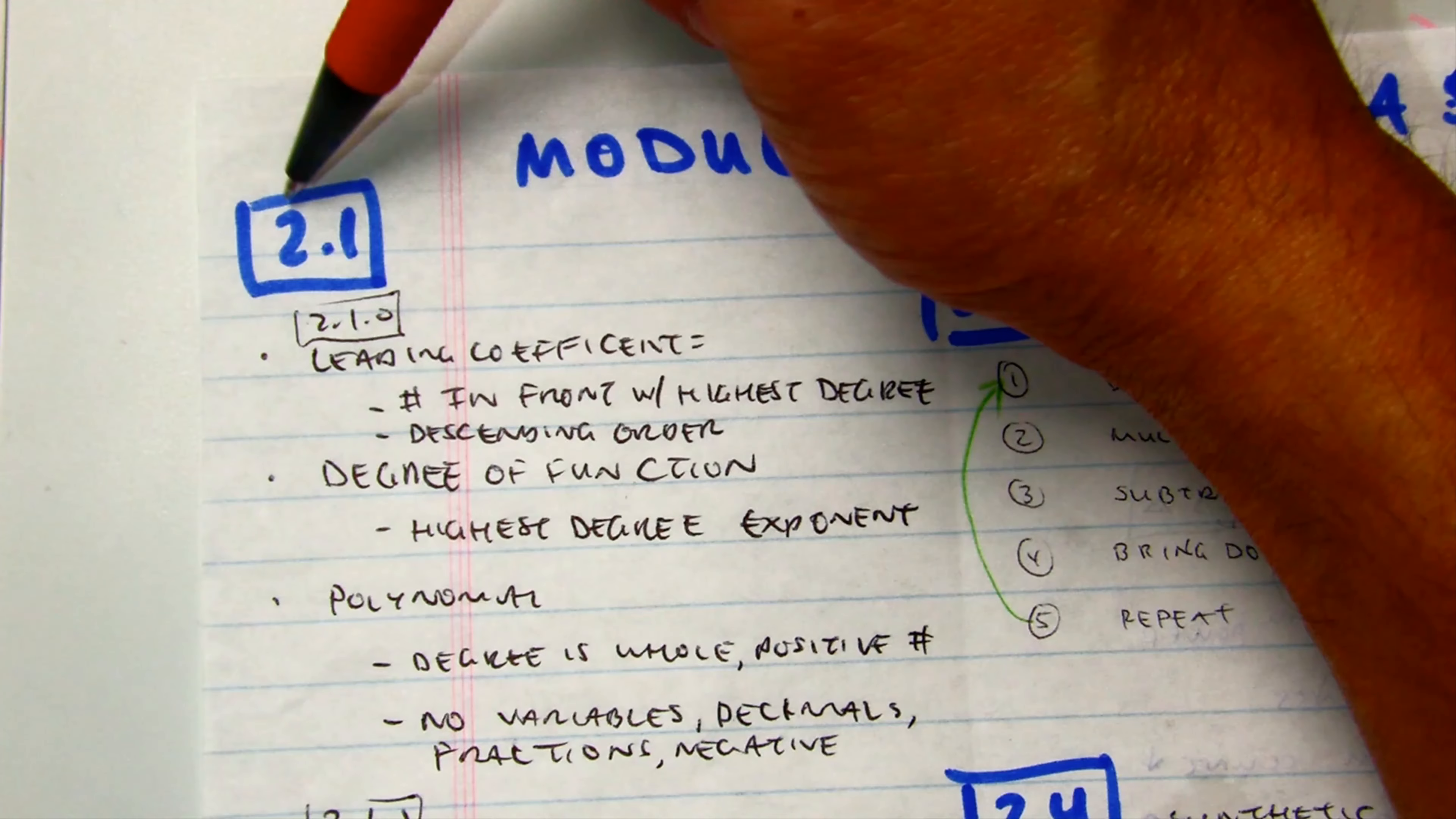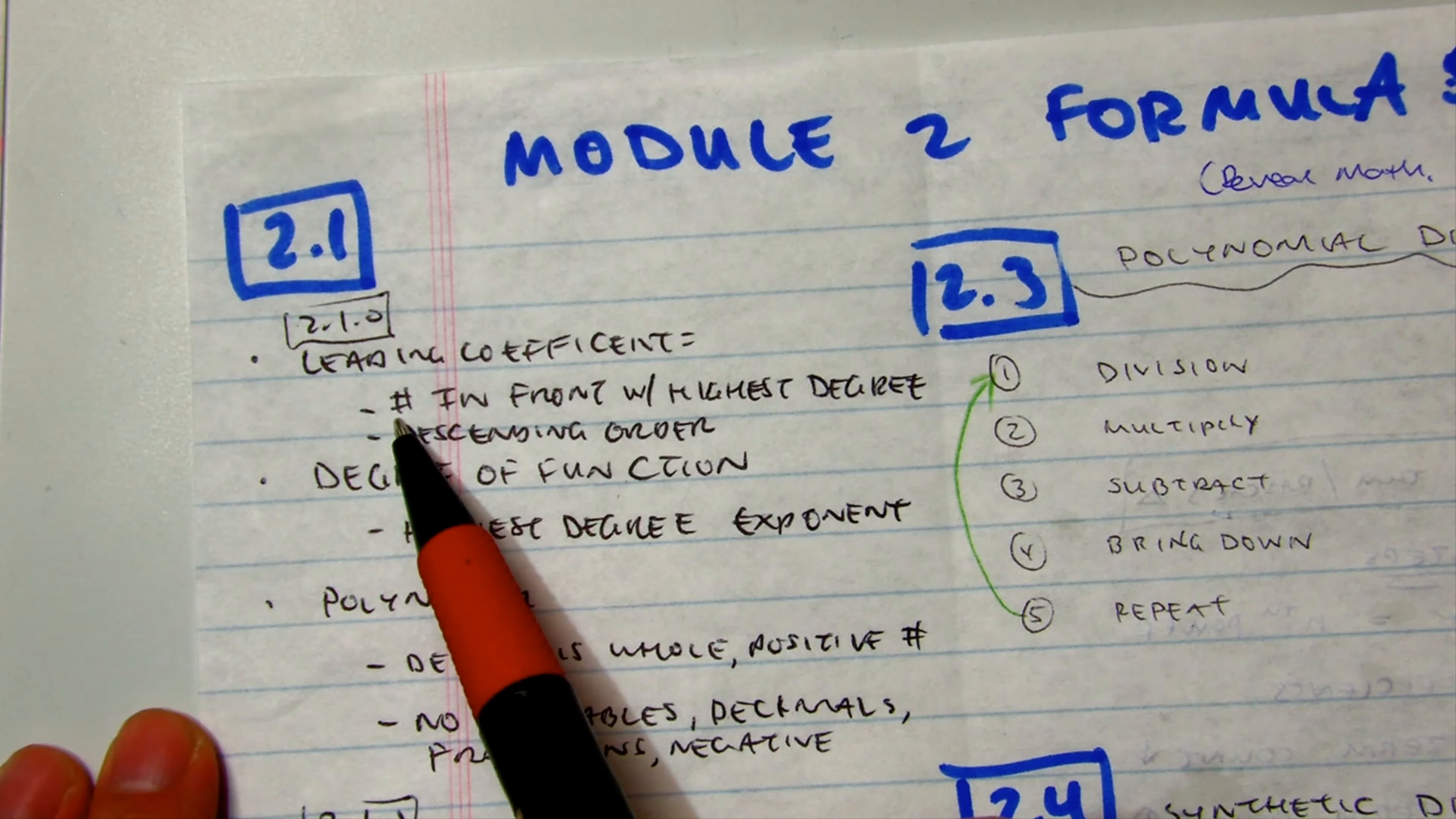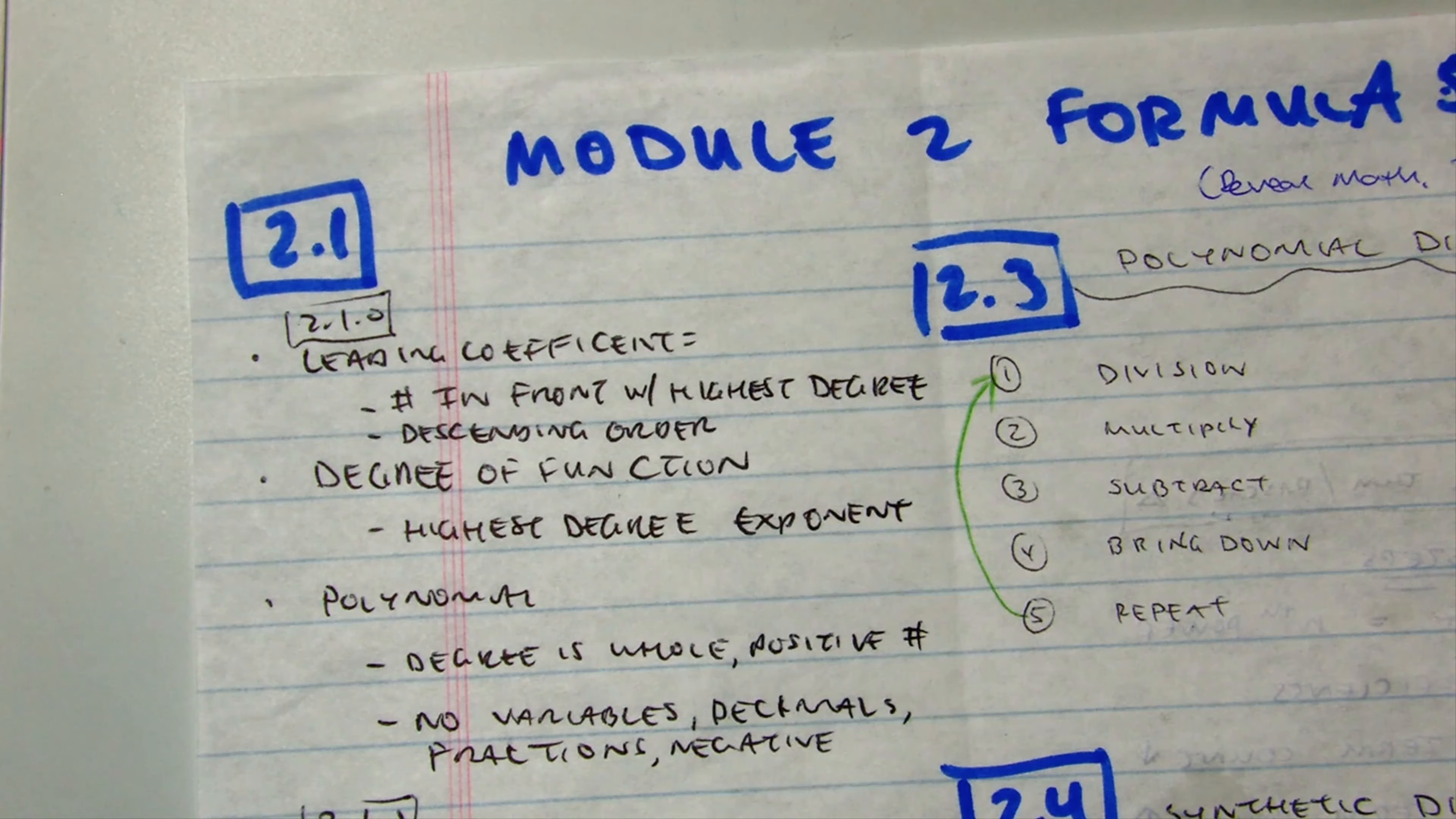In module 2 lesson 1, we talked about the leading coefficient. Leading coefficients are the numbers in front. It's only going to be the number in front if it has the highest degree. Only if it has the highest degree. Let me show you an example of that.